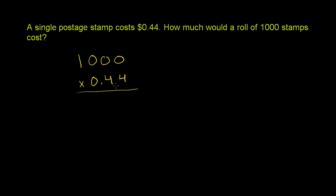What's 1,000 times 44? You could work it out: 4 times 0 is 0, 4 times 0 is 0, 4 times 0 is 0, 4 times 1 is 4, giving you 4,000. Then you put a 0 here, multiply that, get 40,000, and add it all up.